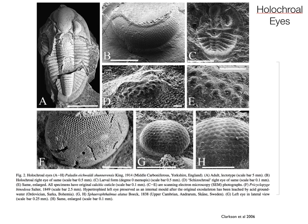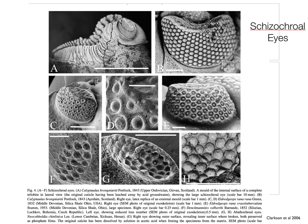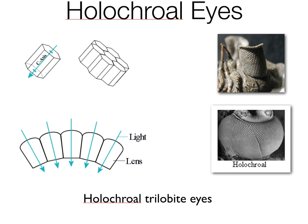Trilobite eyes in general are just super fascinating. There are two main kinds: the first are the holochroal eyes. Each one of the little pieces of the eye is an individual calcite crystal. Light comes through each of these little lenses perpendicular to the surface of the crystal, so each lens can only see light that comes in at an angle almost perpendicular to the surface — basically only things straight in front of it. This is essentially how modern compound eyes in insects work too: pretty low resolution images and a large mosaic of very narrow images, with lenses placed on a curved surface to create a wide field of vision.